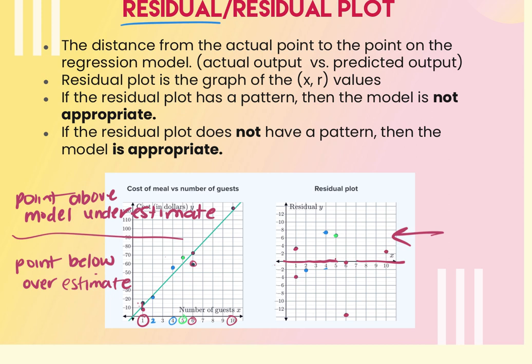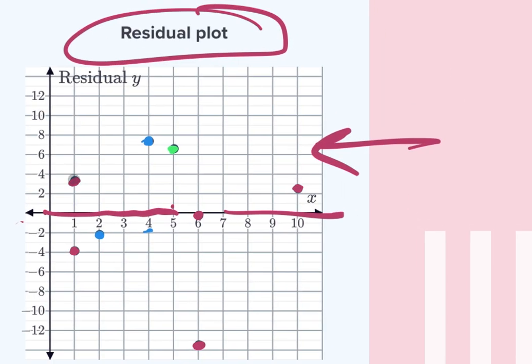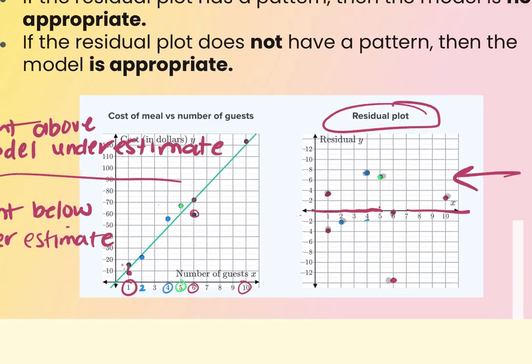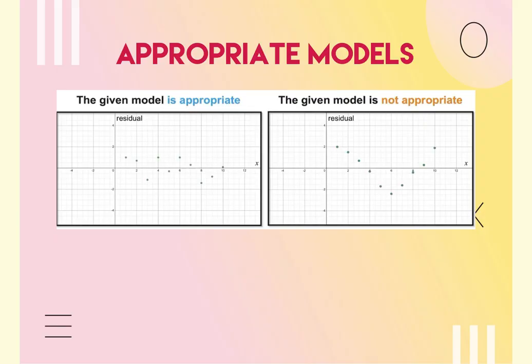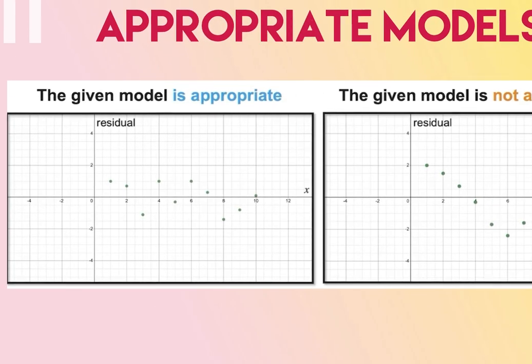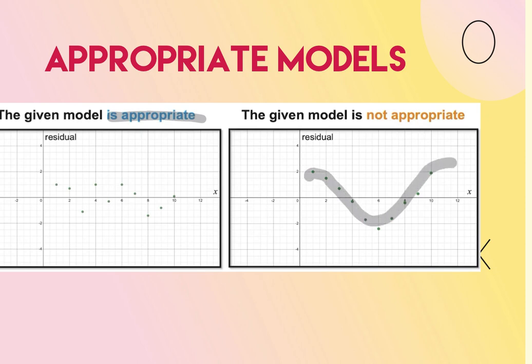If the residual plot has a pattern — like a line, a curve, or symmetric dots — then the model is not appropriate. If it's sporadic with no pattern, the model is appropriate. Looking at two examples: the left residual plot is sporadic with no pattern, so that model is appropriate. The right residual plot has a curvy shape — that's a pattern — so that model is not appropriate, meaning there's a better regression to choose.